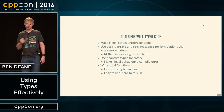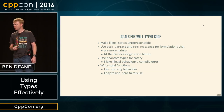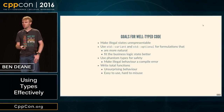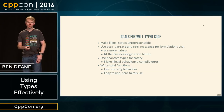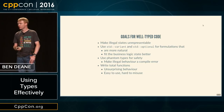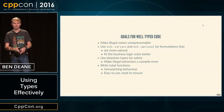Here are my goals for well-typed code. I really think that the addition of sum types to C++ is a game-changer, as important as lambdas, for modeling our state spaces and making illegal states unrepresentable. Phantom types are one way to make illegal behavior a compile error. Writing total functions is to be desired for unsurprising behavior and APIs that are easy to use and hard to misuse. Thank you very much.